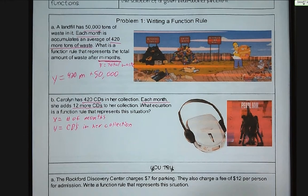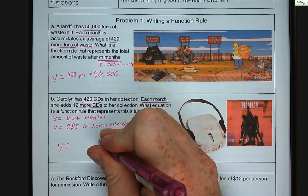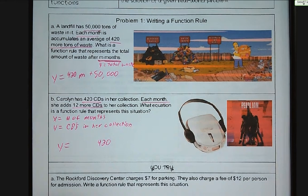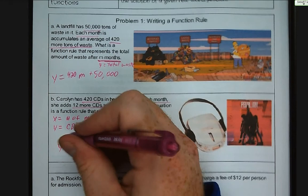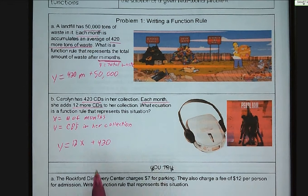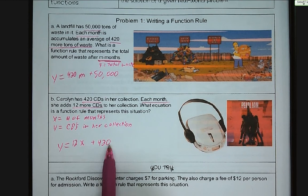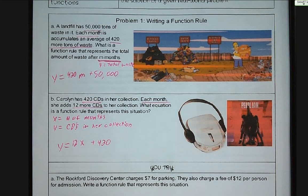So y is equal to, we're starting with 420 CDs in the collection, and we are adding 12 more per month. So 12 CDs per month times the number of months is going to give you CDs, plus the number of CDs she has already is going to give us the total in her collection. Pearl Jam 10, one of the best albums ever. Walkman allegedly was anti-skip, never really bought it. Sorry, Discman, not Walkman.